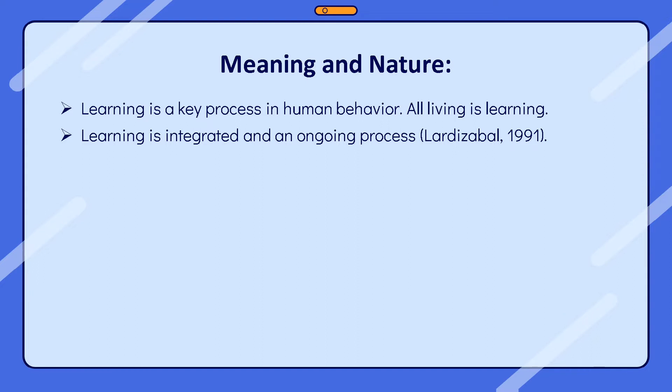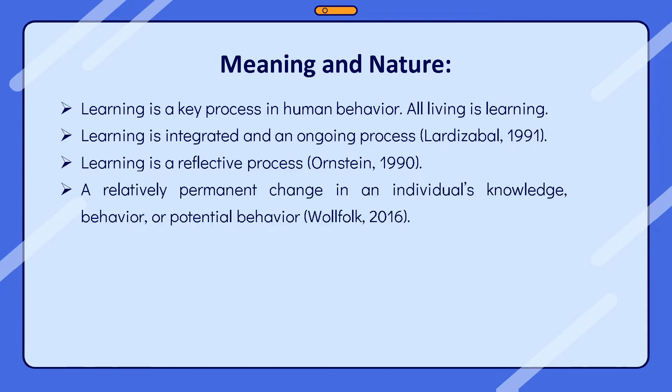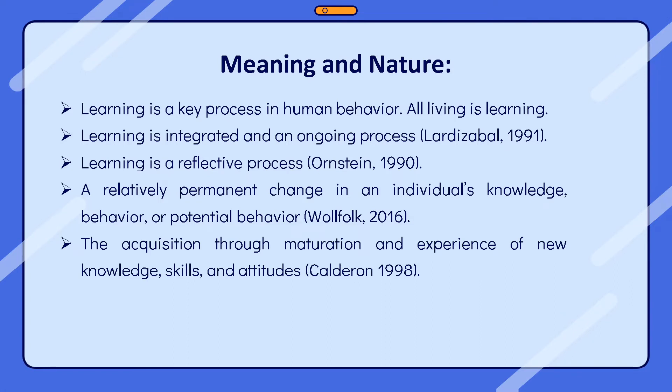Ornstein says learning is a reflective process. It is because we constantly interact with and are influenced by the environment. The experiences we gather make us change and modify our behavior to effectively deal with it. Learning occurs when experience, including practice, causes a relatively permanent change in an individual's knowledge, behavior, or potential behavior. The acquisition of new knowledge, skills, and attitudes through maturation and experience makes us change.